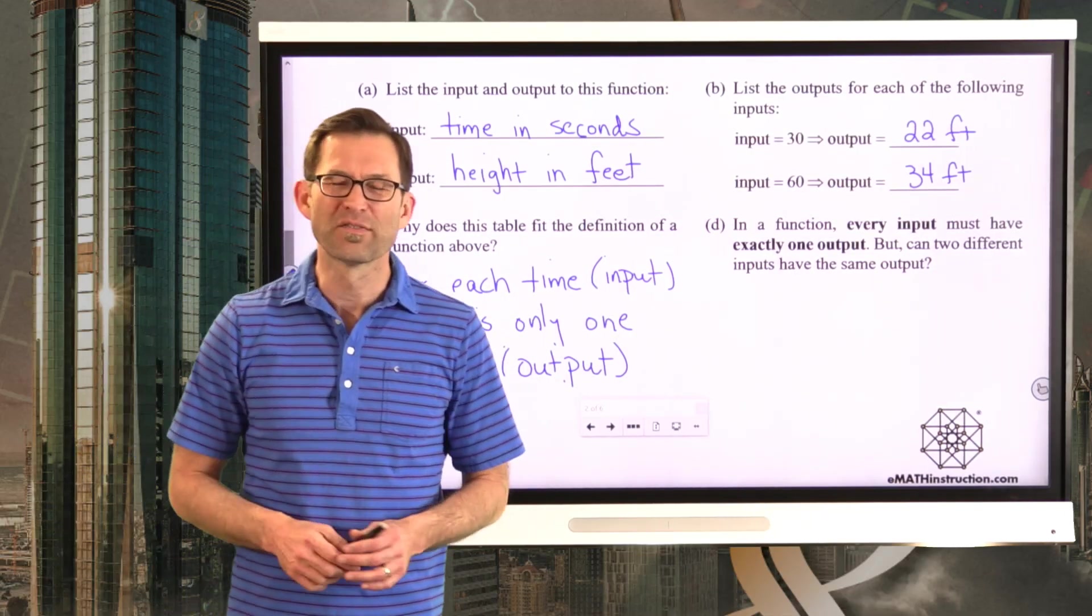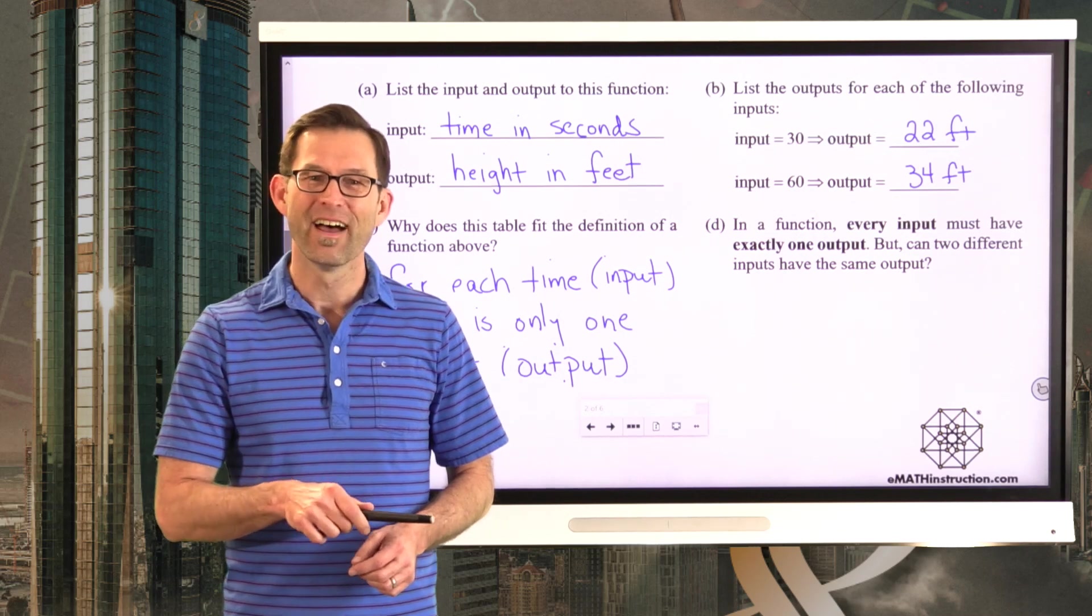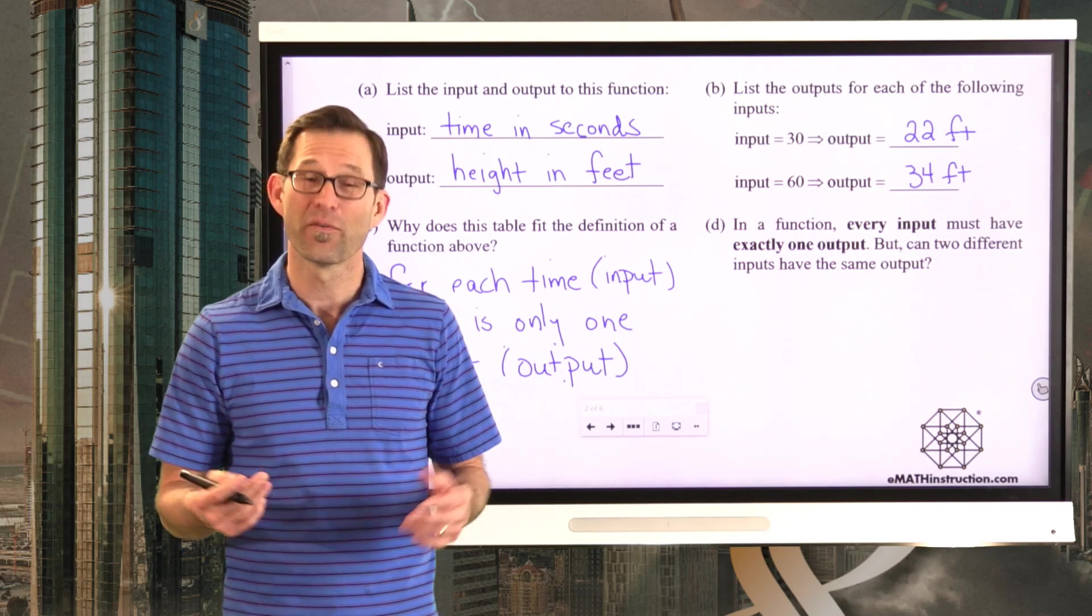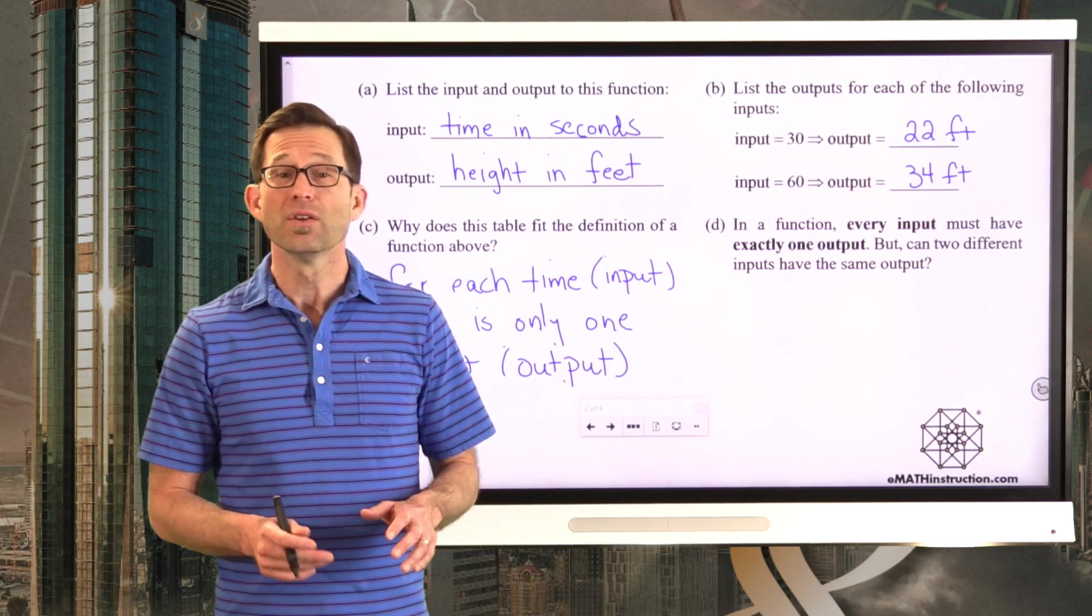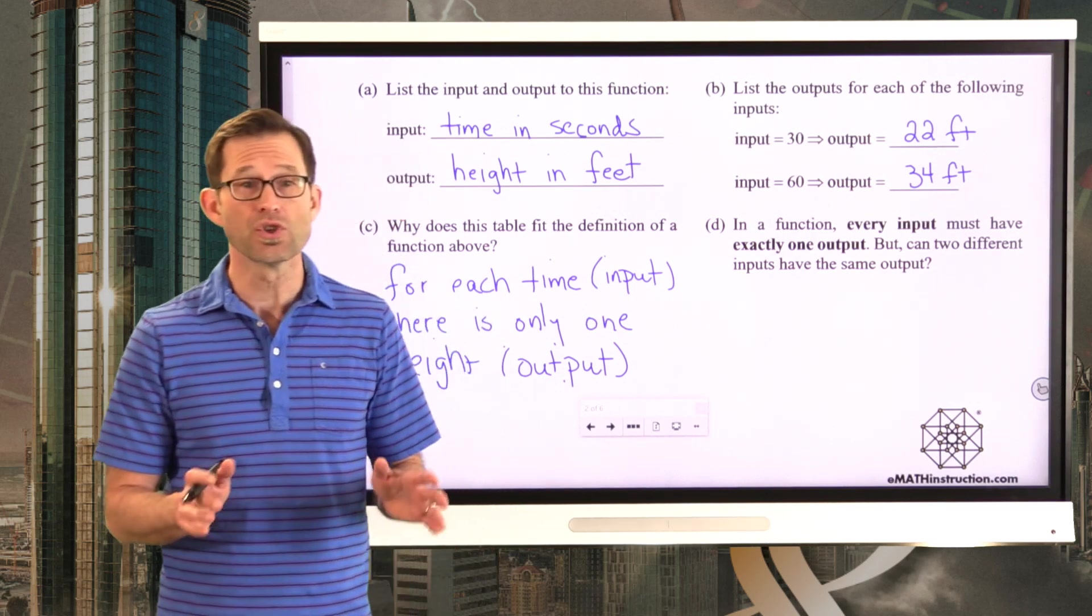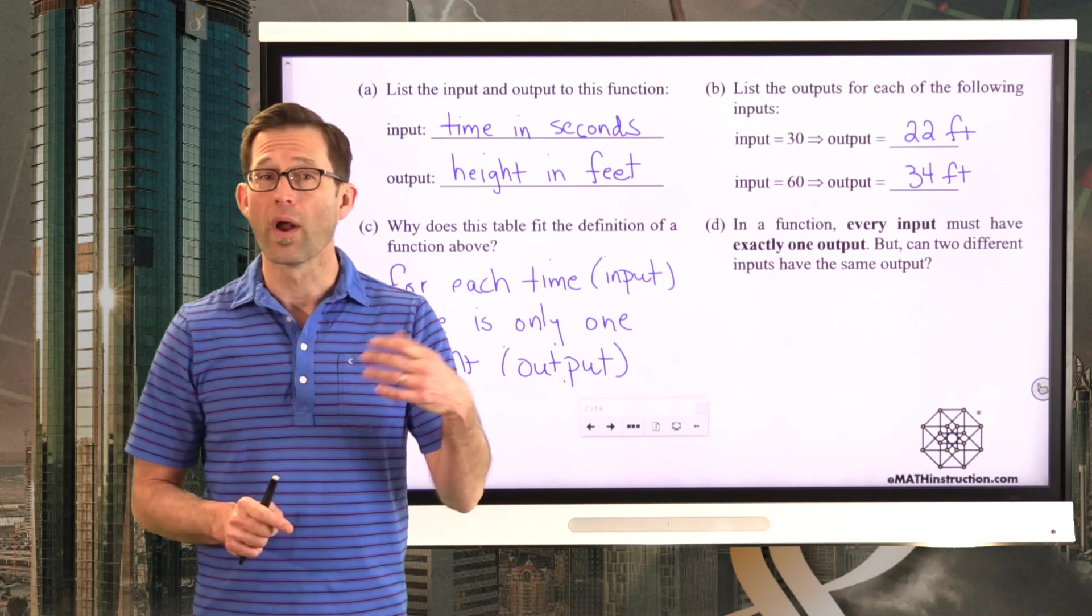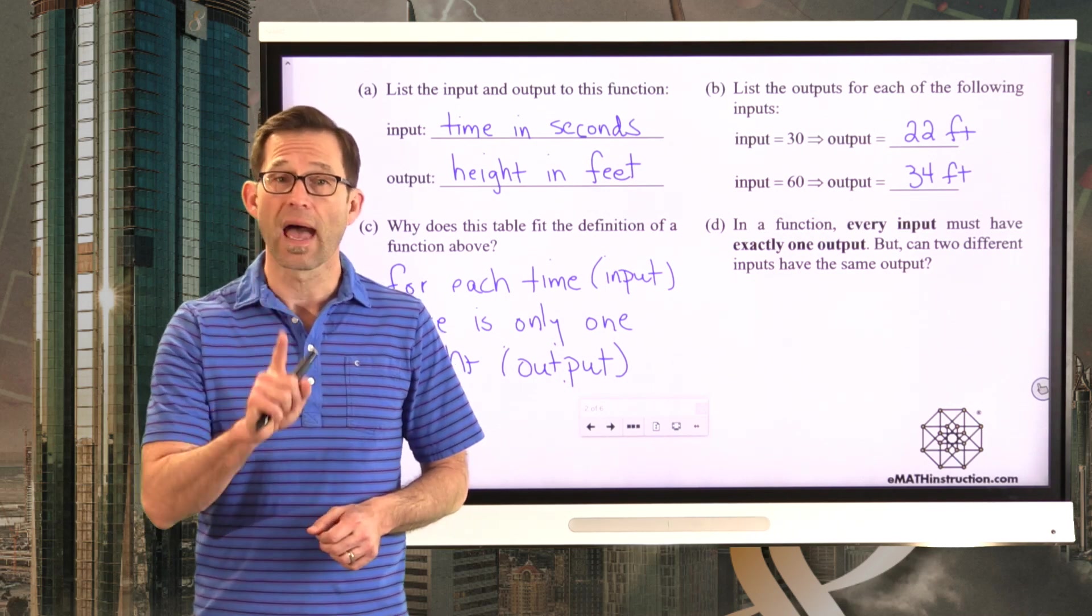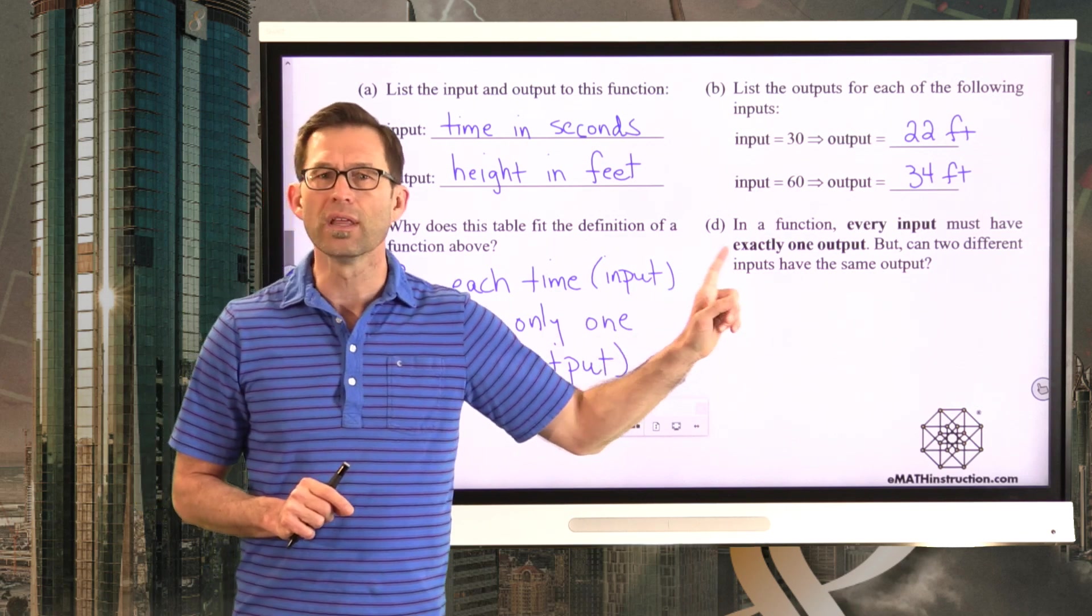And it'd be a little weird if somehow the ball could be at two different heights at the same time. I mean, quite frankly, that's physically impossible. So it really makes sense that this is a situation where the height is a function of time. For any given time, there's exactly one height that the ball is at.